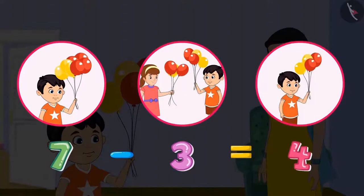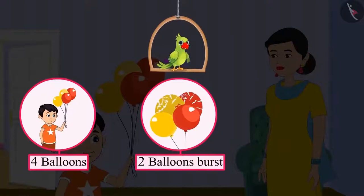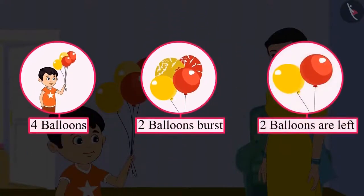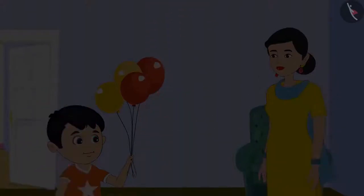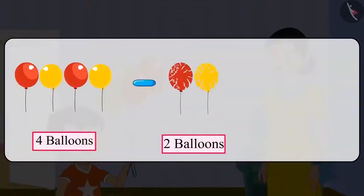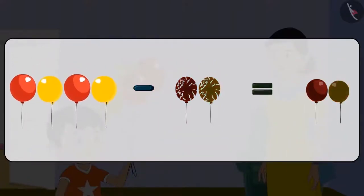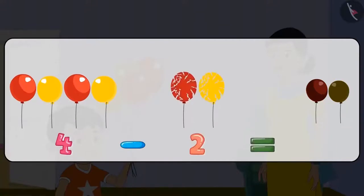Did you understand, children? Now, if out of these four balloons two balloons burst, then how many balloons are left? Two balloons. Can you also write this in a systematic way? On subtracting two from four, two are left. Four minus two equals two.